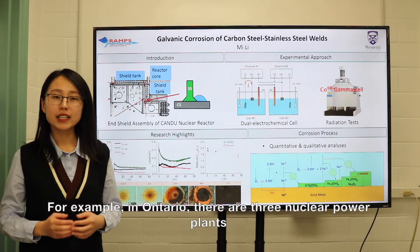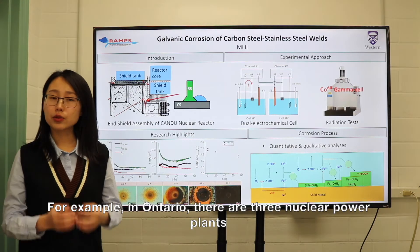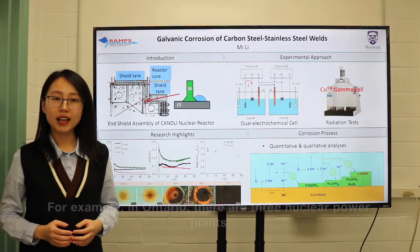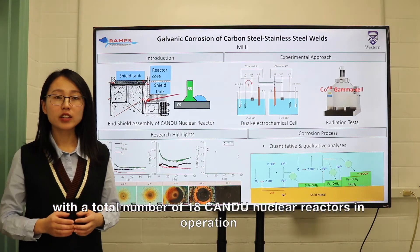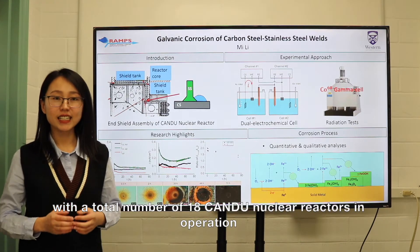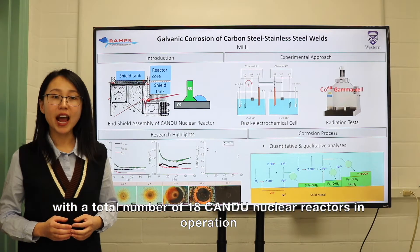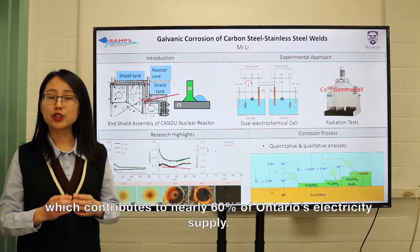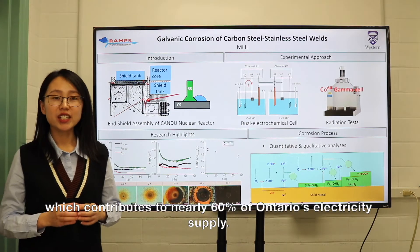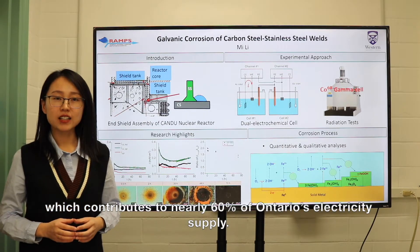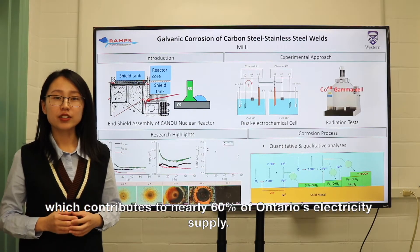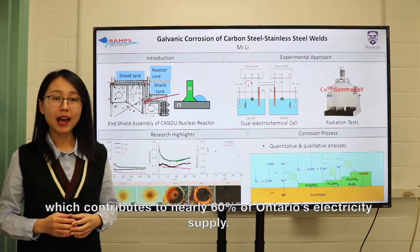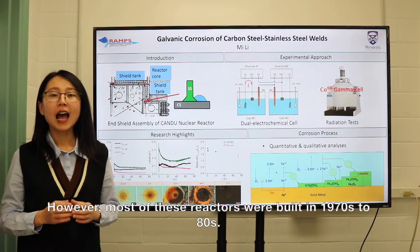For example, in Ontario, there are three nuclear power plants with a total number of 18 CANDU nuclear reactors in operation, which contributes to nearly 60% of Ontario's electricity supply.